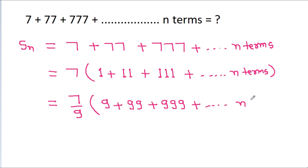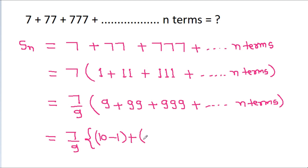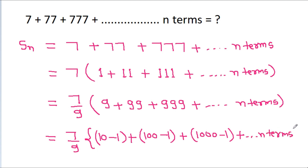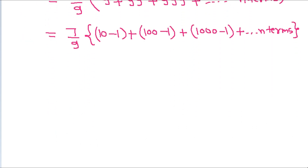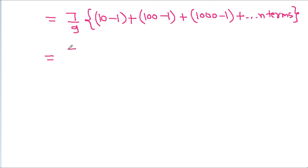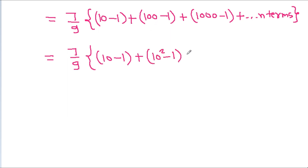Plus up to n terms. And it is 7 by 9, where 9 is (10 minus 1), plus 99 is (100 minus 1), plus 999 is (1000 minus 1), and so on up to n terms. So it is 7 by 9 times (10 minus 1) plus (10 squared minus 1) plus (10 cubed minus 1) plus up to n terms.